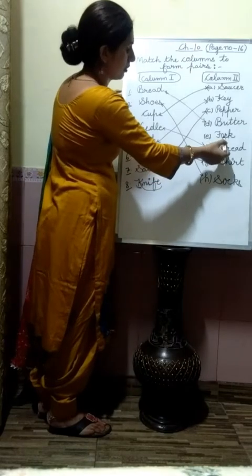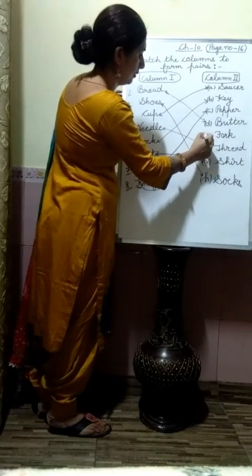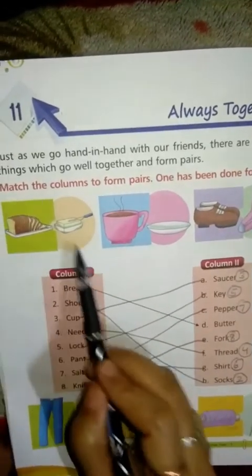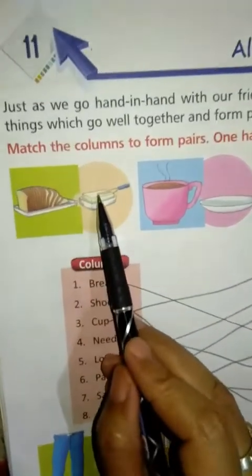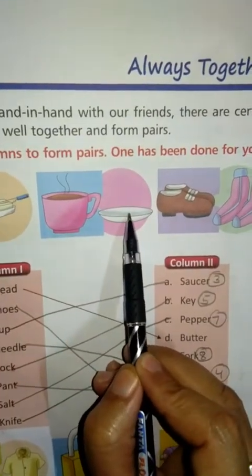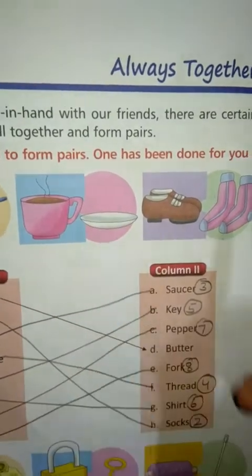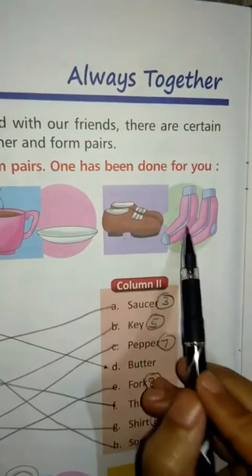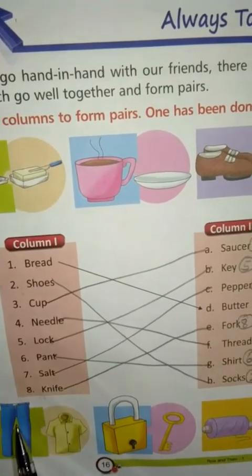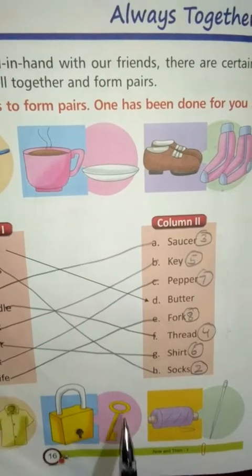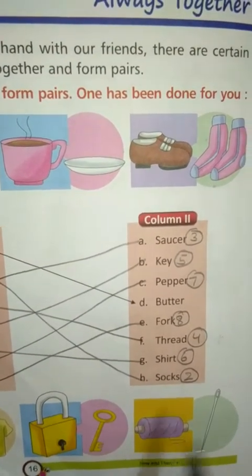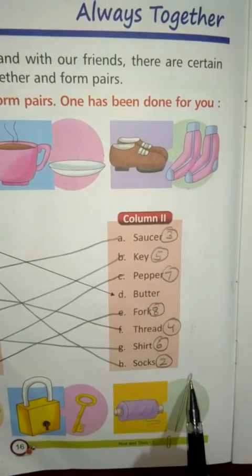Fifth is lock — lock means tala, and lock-key is the pair. We use a key to lock; without both, locking is not possible. Sixth is pant — pant-shirt, because we wear shirt on top and pant on the bottom. Seventh is salt-pepper — namak and kaali mirch, we use them together. Eighth is knife — we use knife with fork. Also, we put butter on bread. Cup-saucer: the saucer is placed under the cup.